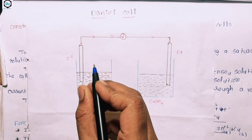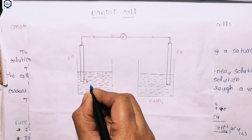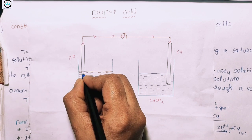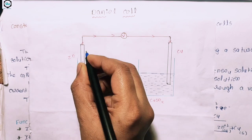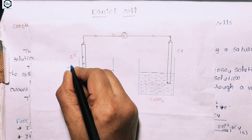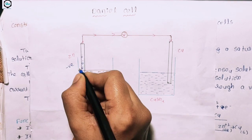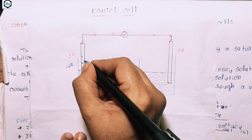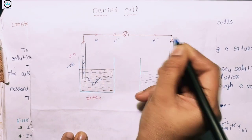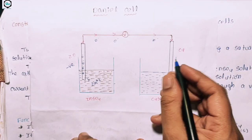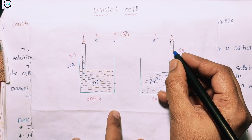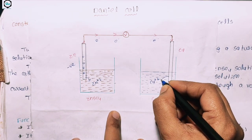At the zinc electrode, zinc ions (Zn²⁺) are formed and electrons are released. These electrons carry negative charge and flow out from the zinc anode through the external circuit. At the copper end, Cu²⁺ ions are present and electrons flow in to be absorbed.